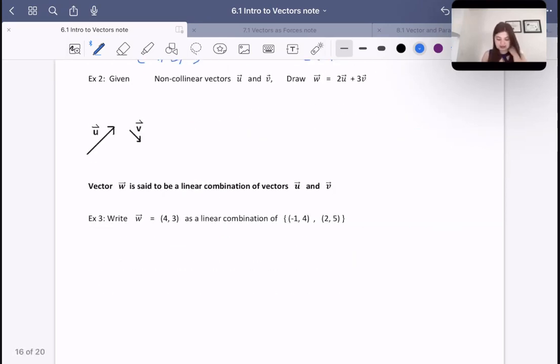Okay, so let's move on. Here it says, given non-collinear vectors. Well, collinear is similar to parallel, right? Non-collinear vectors, so non-parallel vectors, u and v, draw w is equal to 2u plus 3v. Well, how can we do that? We can say, well, u, 1, 2, here's u, and here's u again.